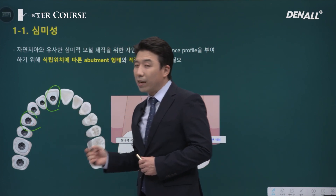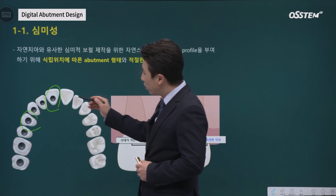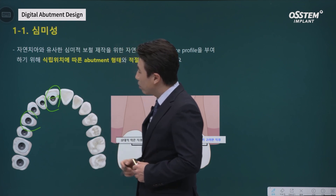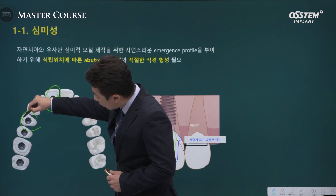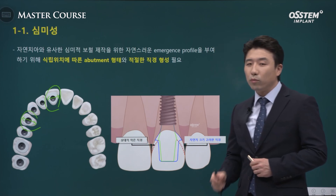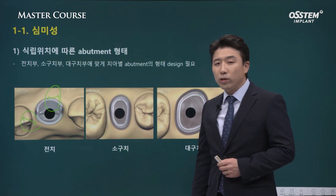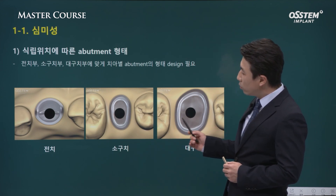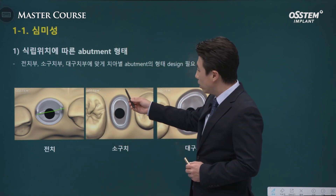In the case of the anterior area, the mesiodistal width is quite significant. In the case of the premolar, the buccolingual width is quite significant. We need to understand the different characteristics of different areas. In the anterior area the width is significant, and in the case of premolar, the buccolingual width is wider.